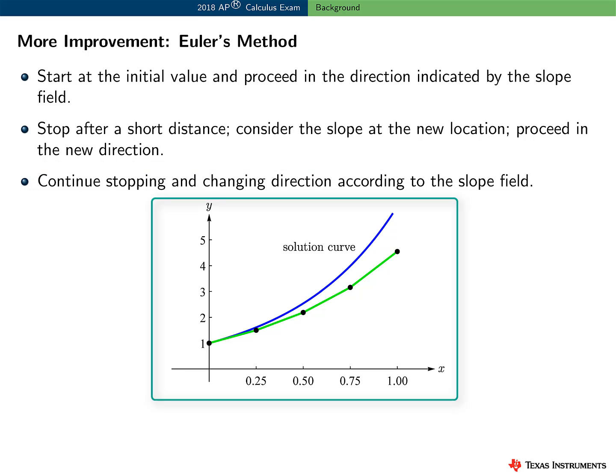Euler's method does not produce the exact solution to an initial value problem. It provides an approximation. By decreasing the step size, and therefore increasing the number of mid-course corrections, we can obtain a better approximation to the exact solution. This figure illustrates Euler's method with step size 0.25.